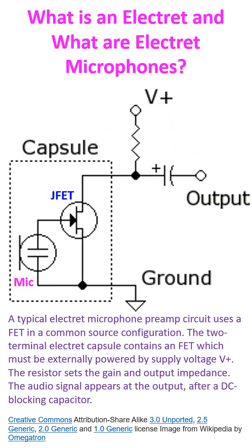An electret microphone has a diaphragm which forms a capacitor that incorporates an electret. The constant charge present in the electret eliminates the need for a polarising power supply needed for a non-electret condenser mic. But a pre-amplifier is incorporated to boost the audio signal.